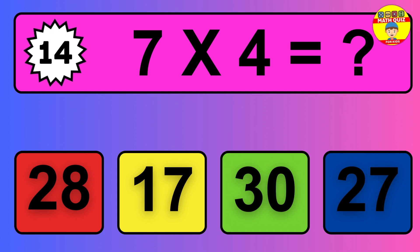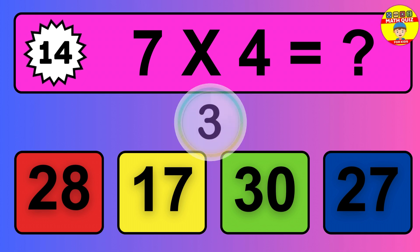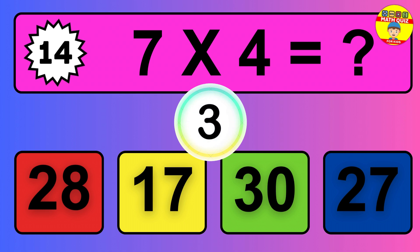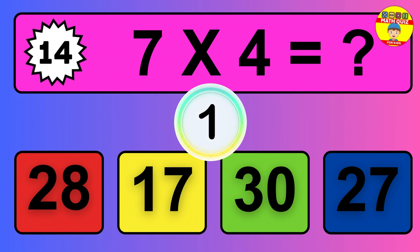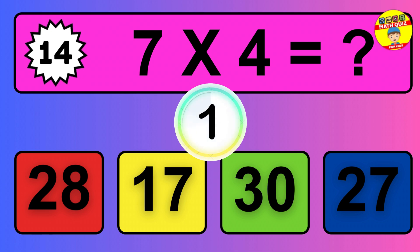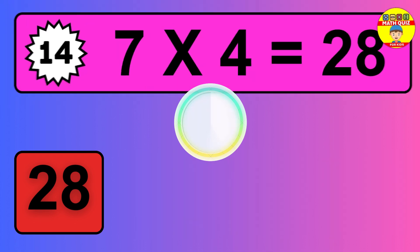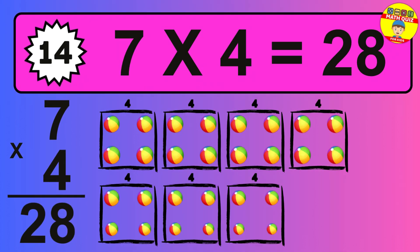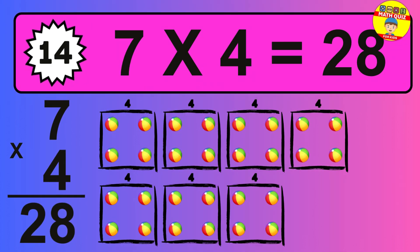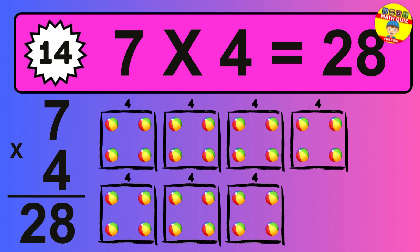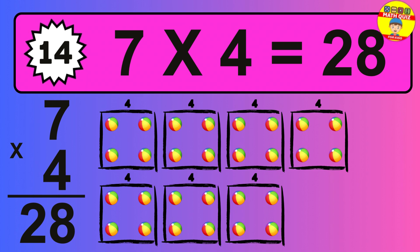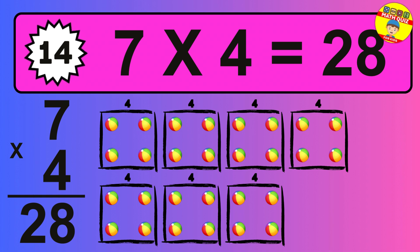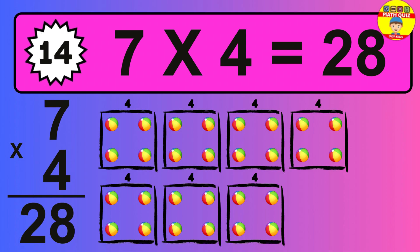Question 14. 7 times 4 equals what? So the answer is 7 times 4 is 28. To calculate, we have 7 groups with 4 balls each one. So how many balls do we have? 28 balls.